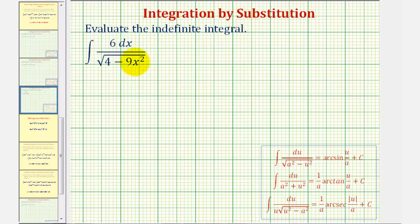So it may be tempting to perform u substitution to find this integral by letting u equal the radicand, or u equals 4 minus 9x squared. Let's try this and see why it doesn't work in this case.